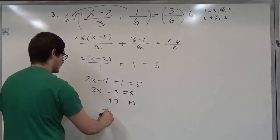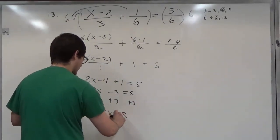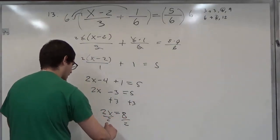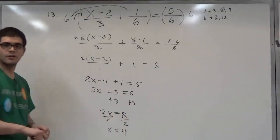We get 2x equals 8. Here we can divide out by 2, and we're left with x equals 4. Thank you.